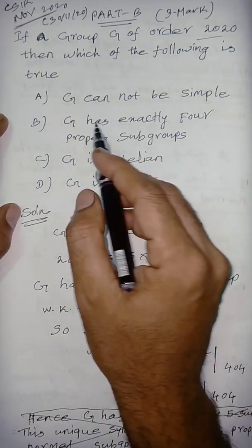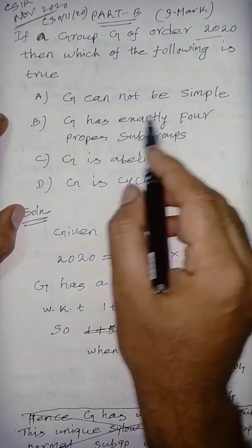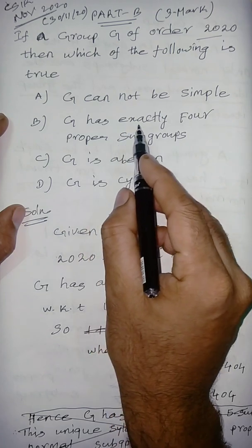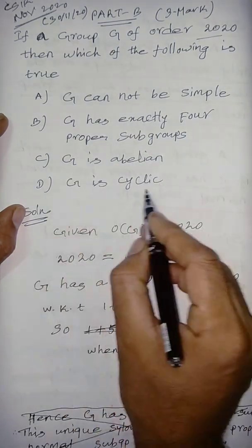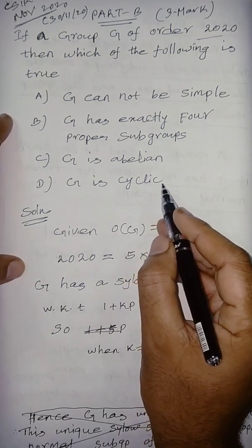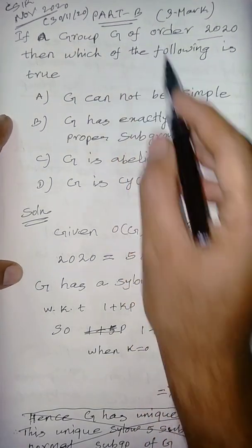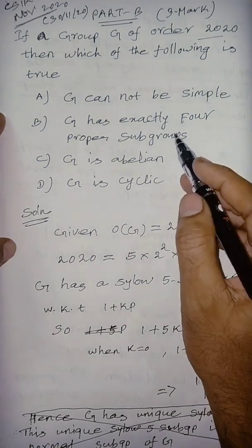Four options are given: A) G cannot be simple, B) G has exactly four proper subgroups, C) G is abelian, D) G is cyclic. This is Part B, so any one of the options is correct.